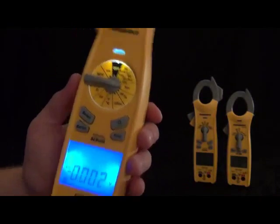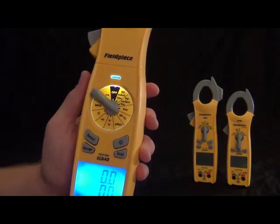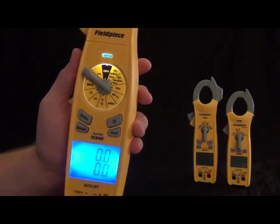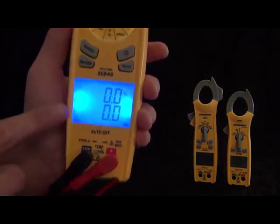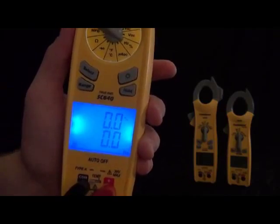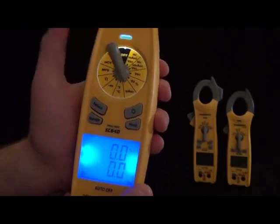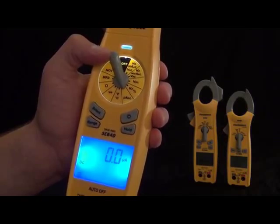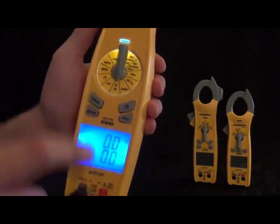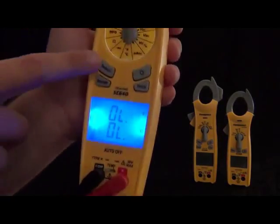Then we got microamps DC for flame rectification. We still have the K-type thermocouple probe and temperature. It'll display both Fahrenheit and Celsius at the same time, depending on whatever you like. Then we got a diode tester, ohms, microfarads, non-contact voltage, and continuity.